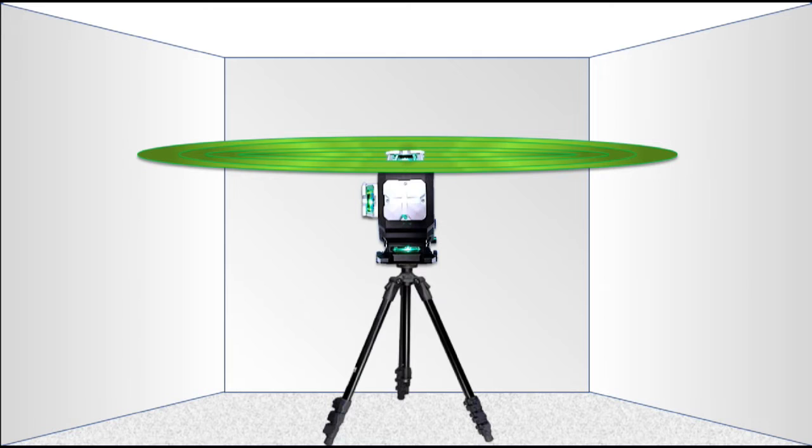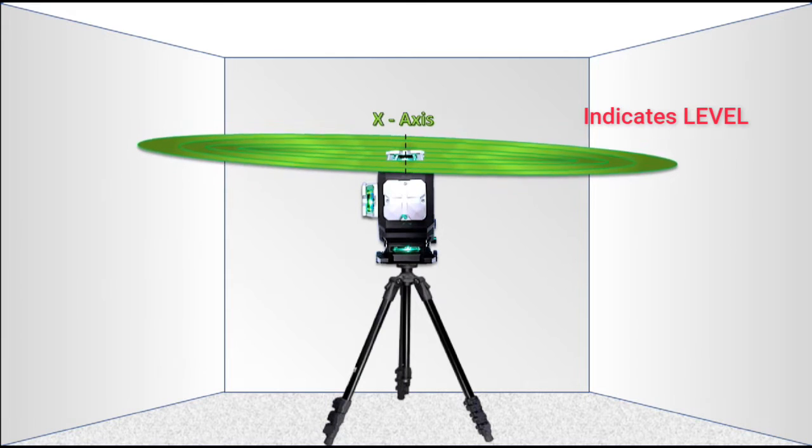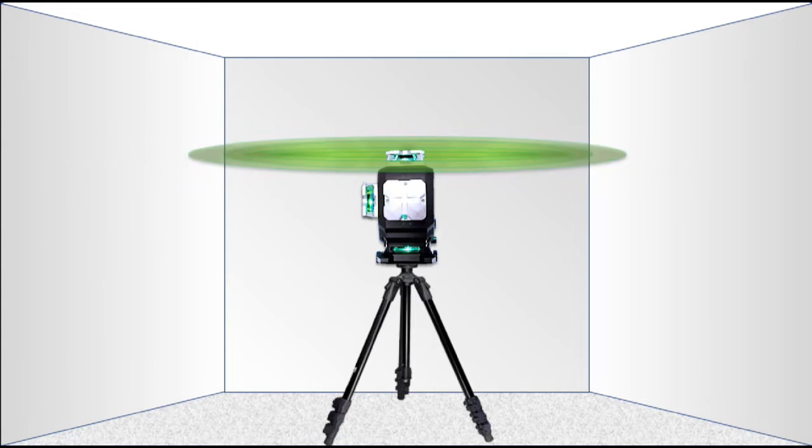The horizontal lines projected outwards on the walls are used to indicate level, and in self-leveling mode, pivot left to right on the x-axis and forward and aft on the y-axis. Calibration is checked across these two axes.